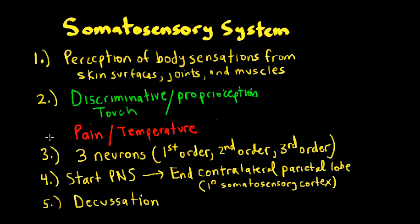And there's always going to be three neurons: a first-order, second-order, and third-order neuron. Information always starts in the peripheral nervous system, ends on the other side, crossing the midline to the parietal lobe, the primary somatosensory cortex. And of course, there has to be a decussation — the information has to cross the midline.